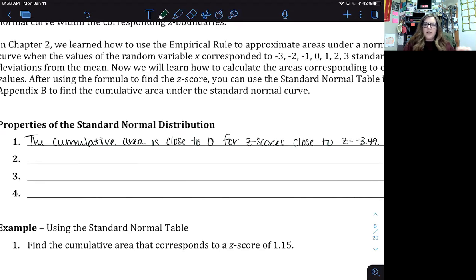So that far left, anything to the left of that would be zero. The cumulative area increases as the z scores increase.